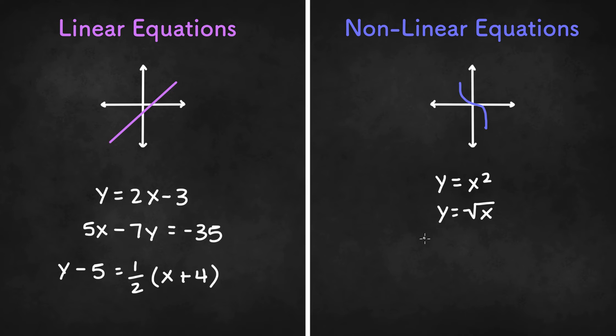Now if you're multiplying x and y together, that's also a nonlinear equation. Another example is when x or y is in the denominator, so if we have something like 6 over x minus 7 over y equals 14, that will also be a nonlinear equation.